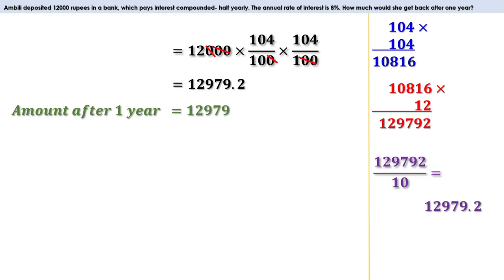There are four quarter years in a year, so N should be taken as 4. The annual rate of interest is 8%; since there are four quarters, the rate per quarter is 8 by 4, or 2%. Taking R as 2 and N as 4, the amount after one year equals 12,000 into (1 plus 2 by 100) all raised to 4. Simplifying gives the amount after one year. Now let us do the problems on page 93.